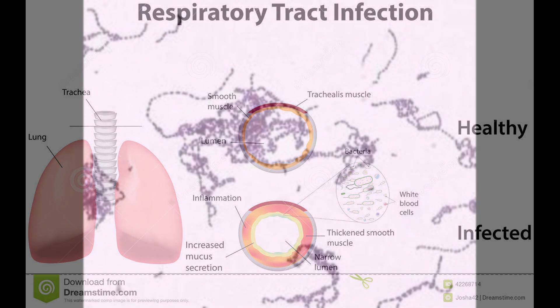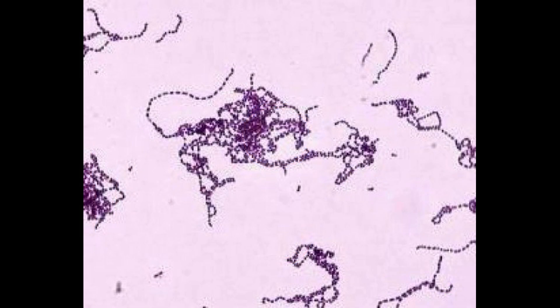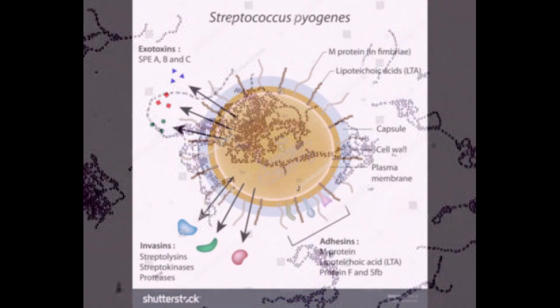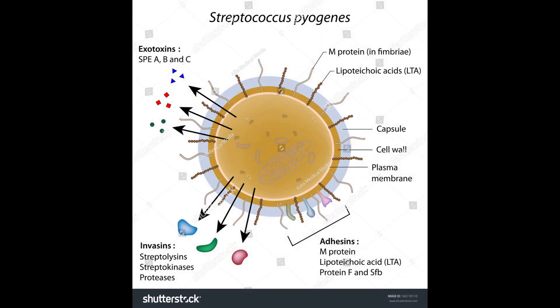Streptococcus pyogenes is a gram-positive species with a cocci shape. It contains a hyaluronic acid capsule that allows it to resist phagocytosis, and has LTA and M proteins around the membrane that allow it to adhere efficiently to host cells.